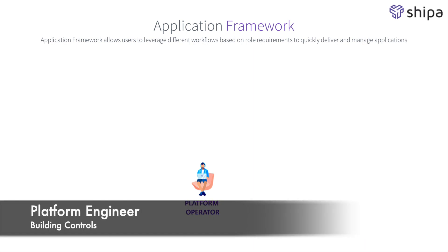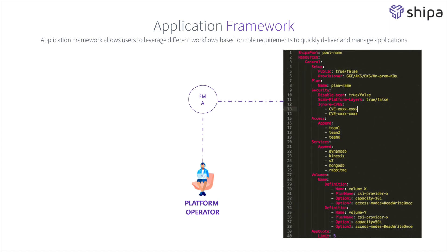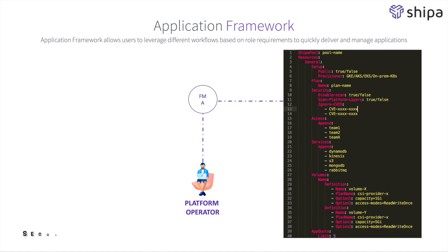If we look from the lens of the platform engineering team or a platform operator, our goal is to define and create frameworks, and these frameworks need to be completely abstracted from Kubernetes or the clusters that we're running underneath. When defining these frameworks, we specify things such as how much memory and CPU our applications deployed using this framework can actually consume, what type of security scans should be run, and if any exceptions we want to open, which teams can leverage this framework when deploying their applications, volumes, all the way down to the network configuration such as policies or zero trust capabilities. As we see in the example here, it is completely abstracted away from the specific cluster — we're creating an abstraction layer as a framework.